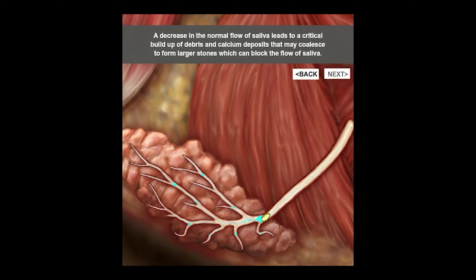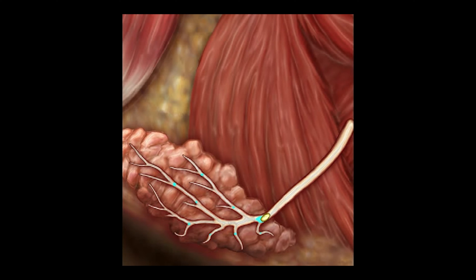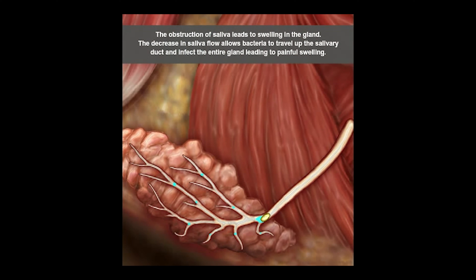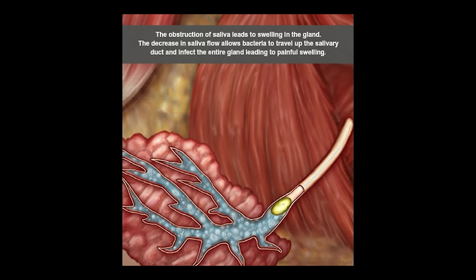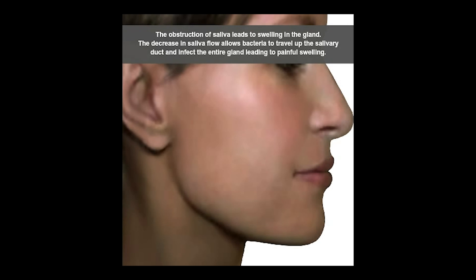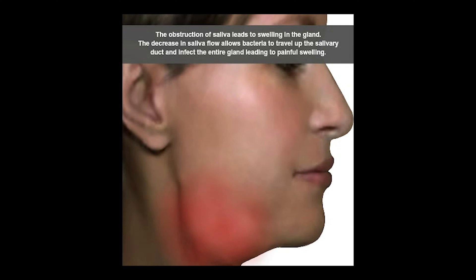Once that happens, the saliva has no option but to go backwards into the gland, which causes the gland to swell and become very inflamed. When you look at yourself externally, you see this very large swollen and tender area under your jawbone, which we know is an obstructed submandibular gland.